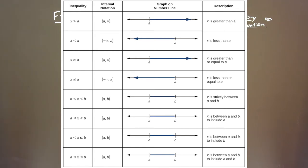If X is less than or equal to A, similar idea — bracket over the A, but we have negative infinity there. A is less than X, which is less than B: we have parentheses A and B, and X is strictly between A and B. If A is greater than or equal to X, which is less than B, we have a bracket on the A part, showing X is between A and B and includes A.